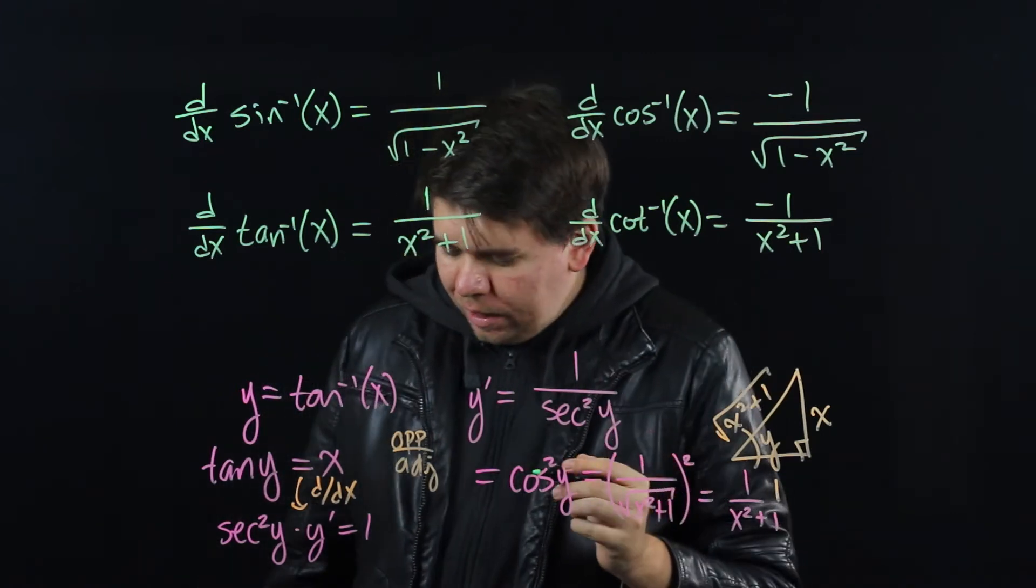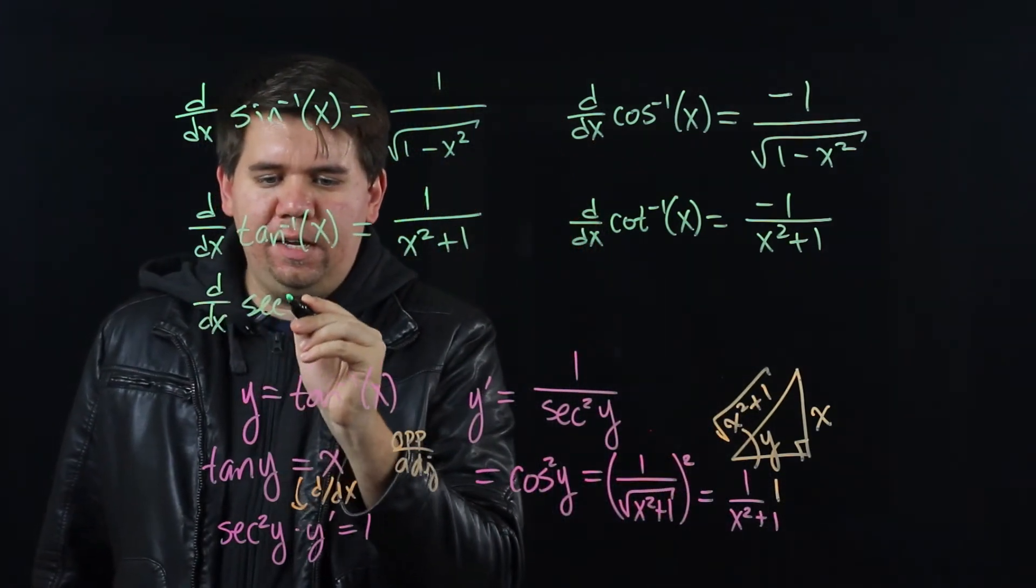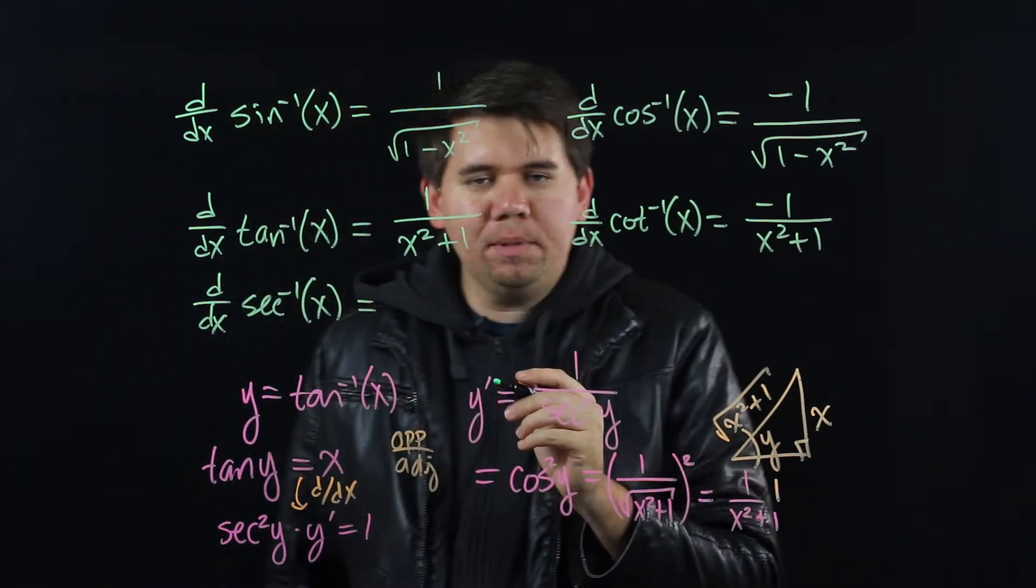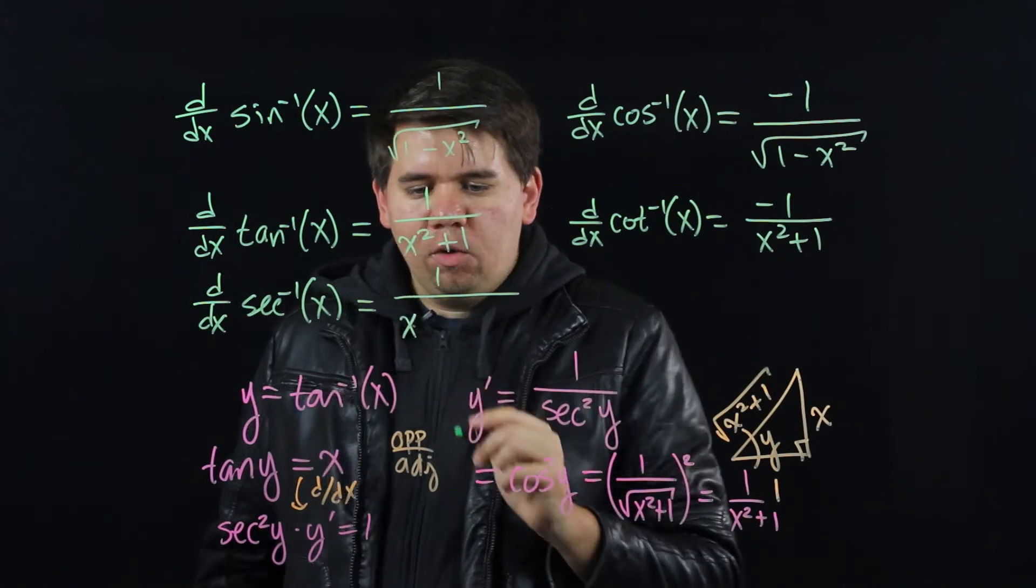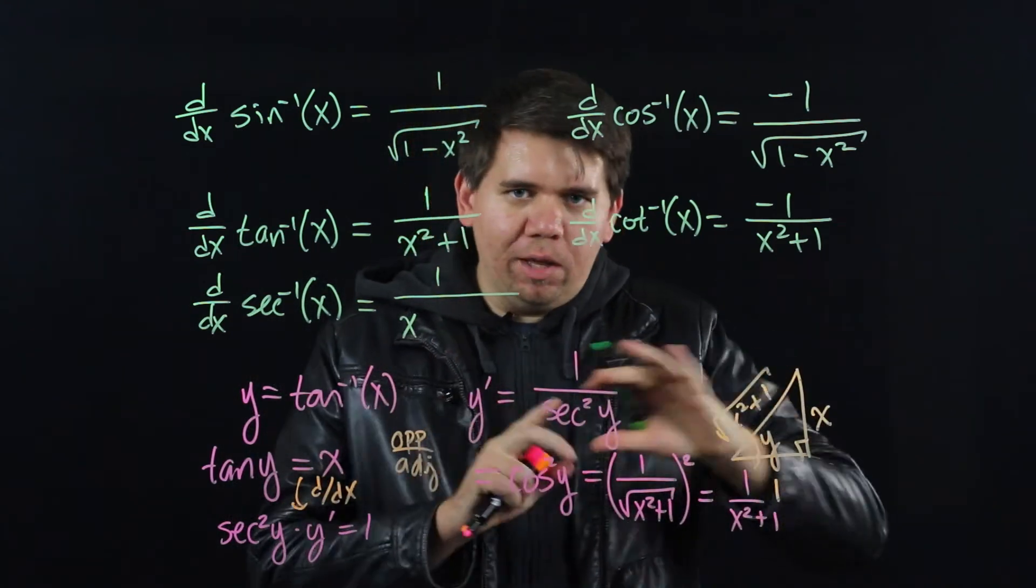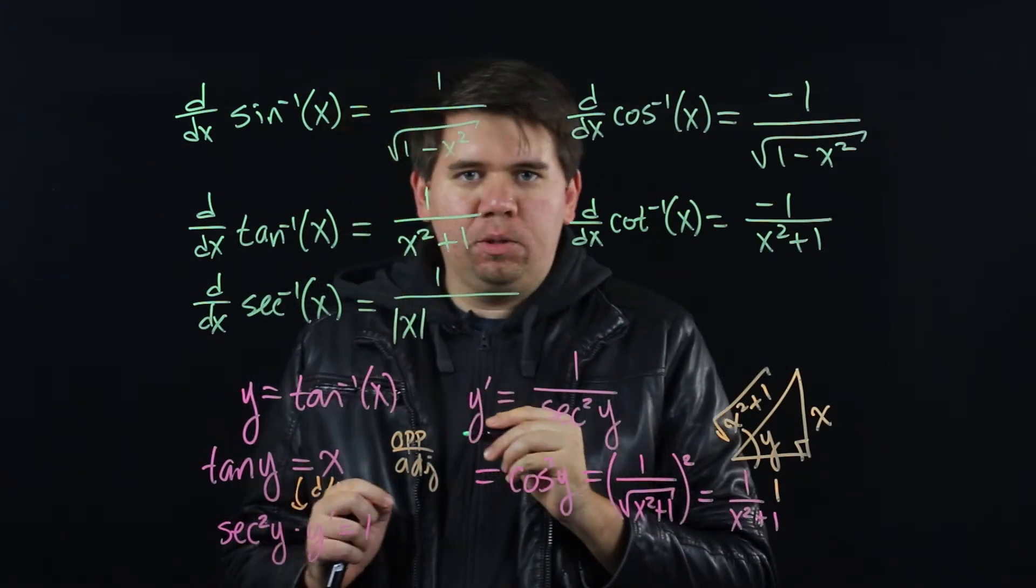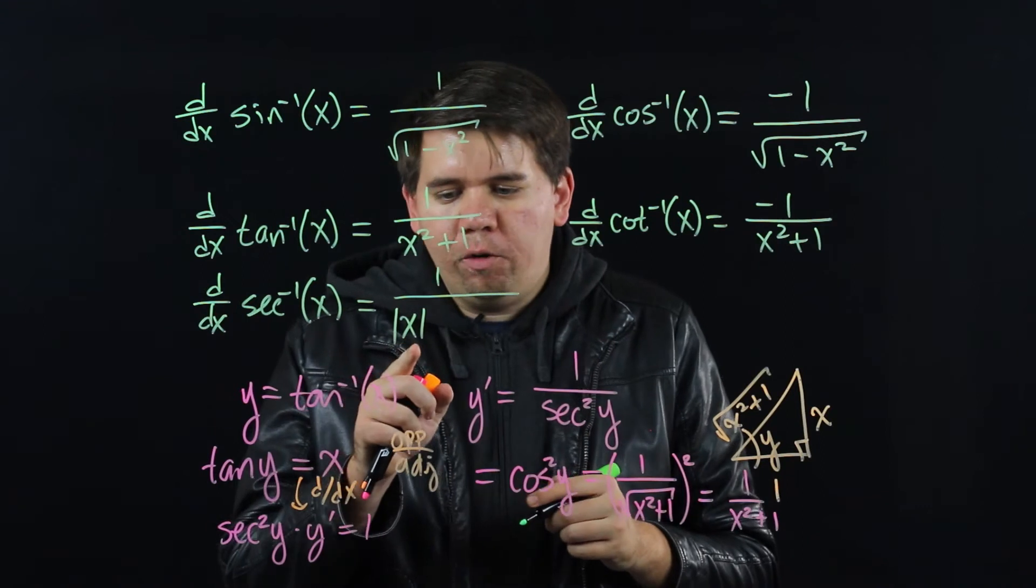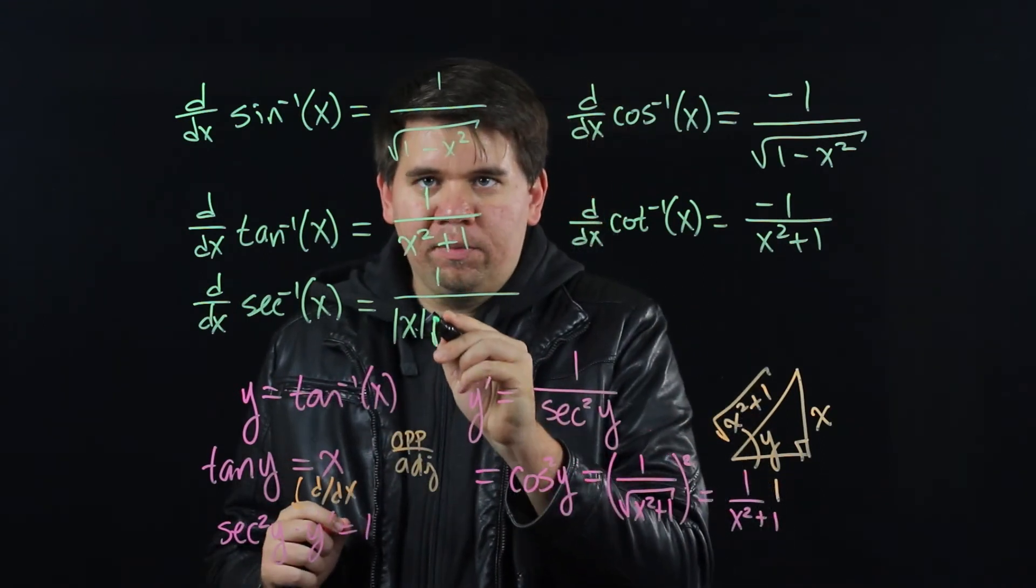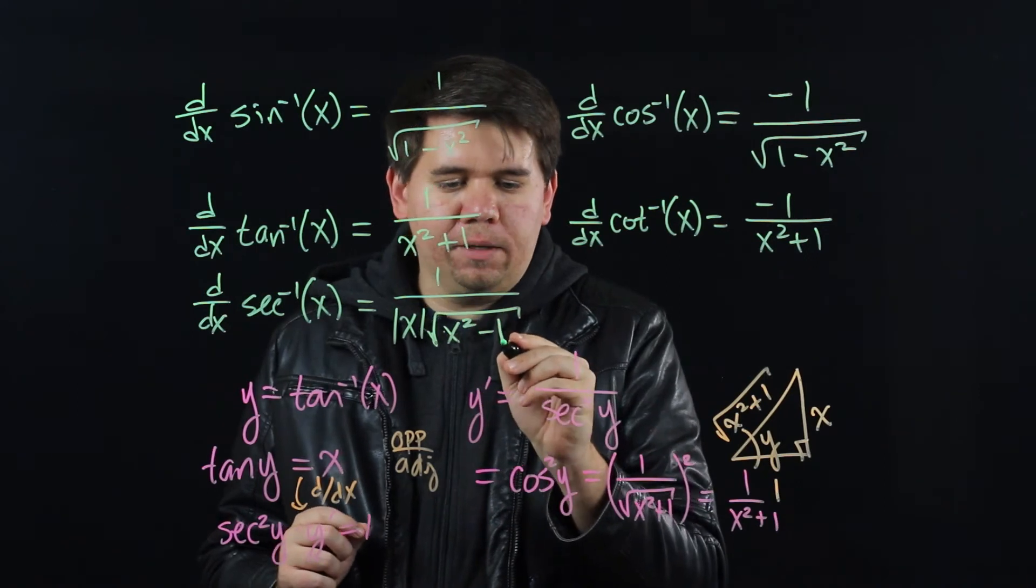And as for secant, if I want to find the derivative of secant inverse of x, it comes out to be 1 over x. Well, the x always has to be positive. If you run through the argument, you convince yourself that x has to be positive. So we'll put an absolute value around it. So if you put a negative, it'll come out positive. 1 over the absolute value of x times the square root of x squared minus 1.